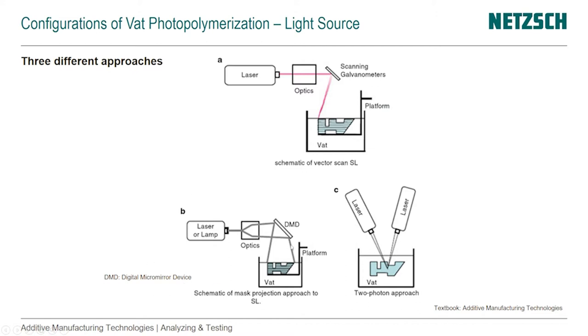In schematic B, what you see is a digital micromirror device that actually allows the laser to be prepatterned into the pattern we need for one whole layer. And that whole surface of the layer is exposed at once and cured by that operation.